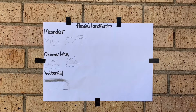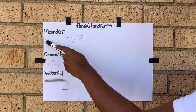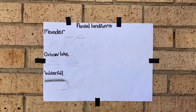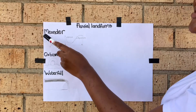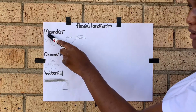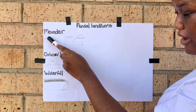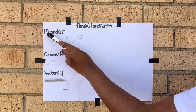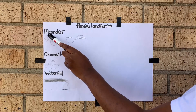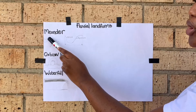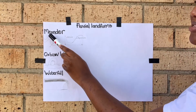The first one we're going to start off with is a meander. A meander is simply a bend or curve in the course of a river. When water flows through, the flow is faster on the outer bend compared to the inner bend, so because of that there is more erosion on the outer bend.